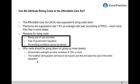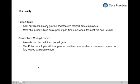Reasons for rising costs — pre-existing conditions, fear of government regulation, rising costs of care — all contribute to a very specific area you should care about: the burden rate associated with true labor costs. I want to get into significant detail on that in the next couple of slides.